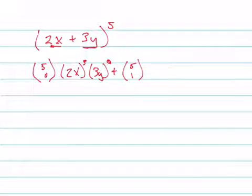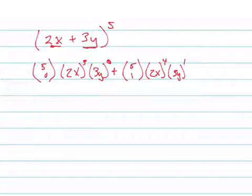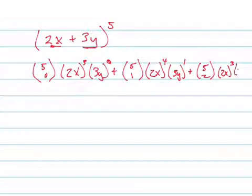Now I do 5 choose 1 times 2x to the fourth power. It's going to reduce by 1, and this is going to increase by 1. And keep going. 5 choose 2, 2x to the third power, 3y squared.